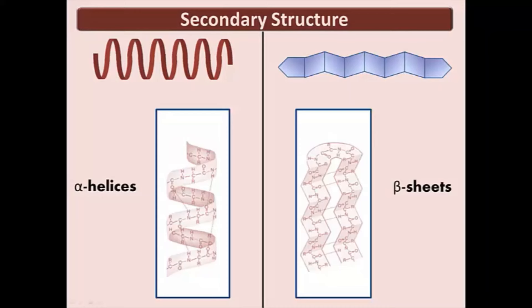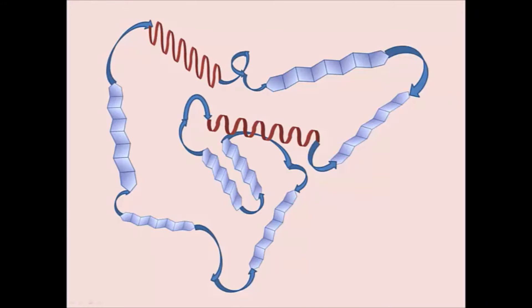The hydrogen bonds of alpha helices and beta sheets do not take place between amino acid side chains — the bonding is between the backbone components. Secondary structure is the interaction between backbone pieces. Tertiary structure is the interaction of amino acid side chains. The interactions of the side chains are in the form of hydrophobic interactions, hydrogen bonding, ionic bonding, and disulfide bridges.